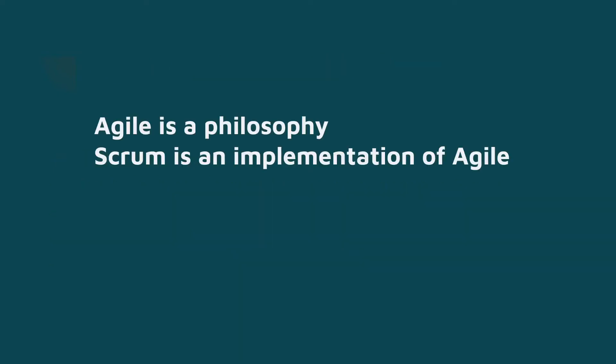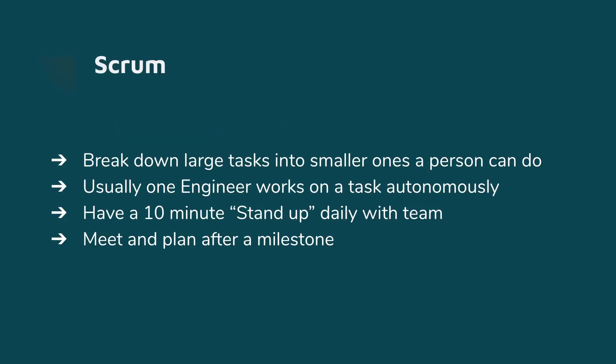There's another term called Scrum, which is one of the implementations of Agile — and I think this is the one adopted by a lot of companies. When you have a huge project, you break down the entire project into smaller tasks. A single task is usually taken care of by a single engineer, giving them the autonomy to work on it without too much distraction. Then you have a standup — a meeting you have every day. Everyone on the team stands in a circle and talks about what they were doing, the difficulties they're having, and what's working and what's not.